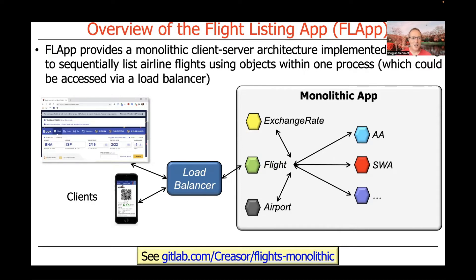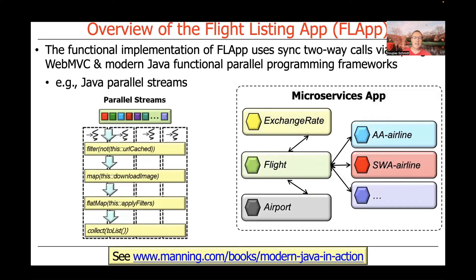The next approach we used was a functional implementation of FLAP that used synchronous two-way calls based on Spring WebMVC and modern Java functional parallel programming frameworks — in particular, parallel streams. That approach also broke up the services so that everything was no longer running in one process as co-located objects, but instead as a bunch of microservices communicating with one another using synchronous two-way method invocations from the client, the various microservices, and the app gateway point of view. Modern Java functional parallel programming was used to carry out the operations.